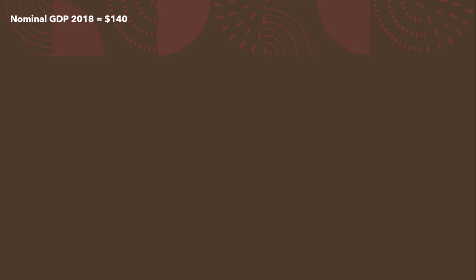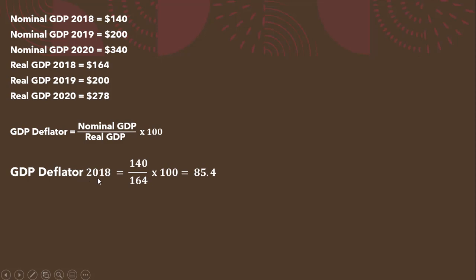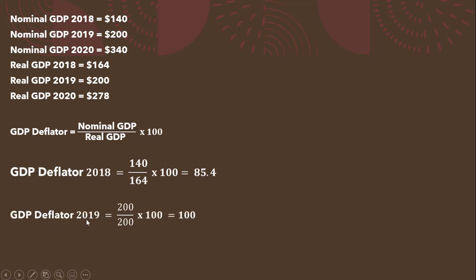Finally, we're going to calculate our GDP deflator in each year. The GDP deflator is nominal GDP in a given year divided by real GDP in that year, multiplied by 100. So the GDP deflator in 2018 is nominal GDP in 2018 divided by real GDP in 2018, all multiplied by 100 — we get 85.4. The GDP deflator in 2019 is 200 divided by 200 times 100, and we get 100. Remember, in the base year, your GDP deflator will always equal 100, because nominal GDP will always equal real GDP in the base year.